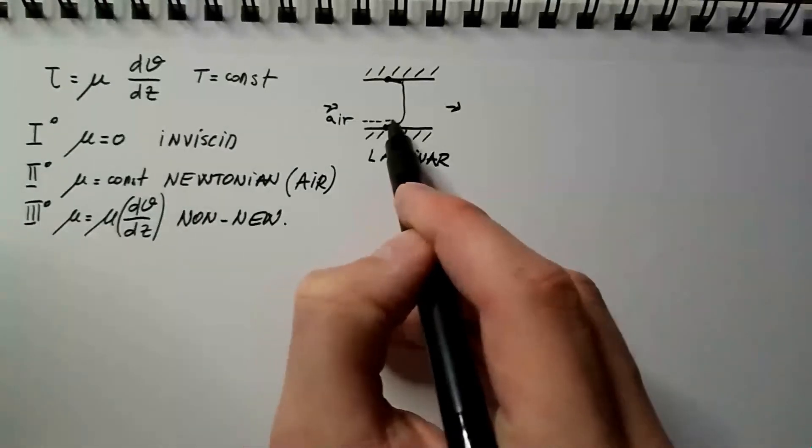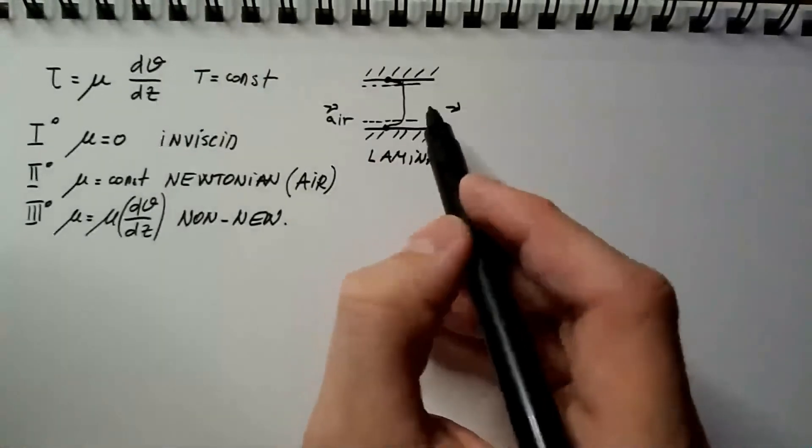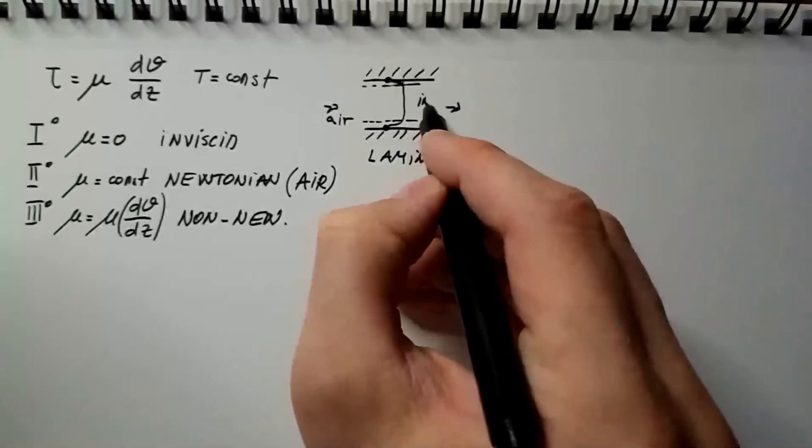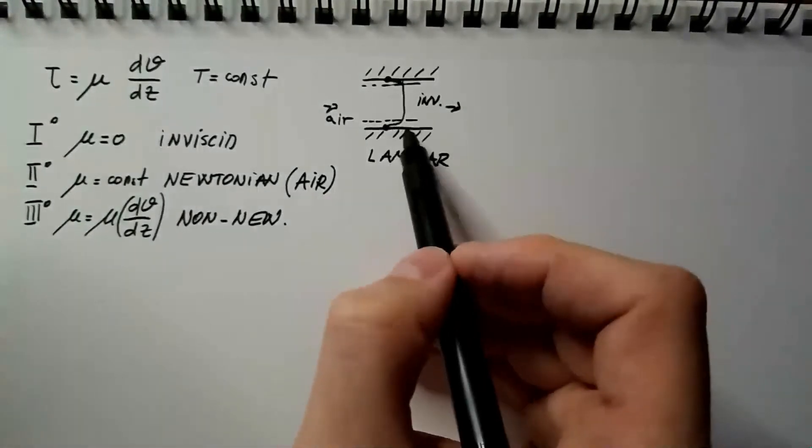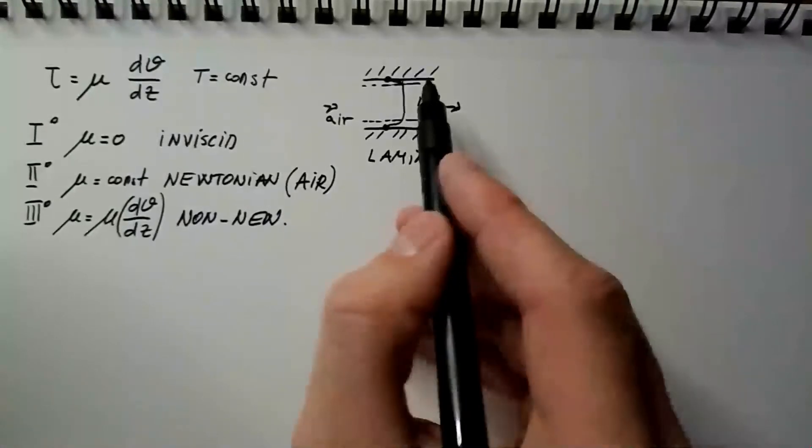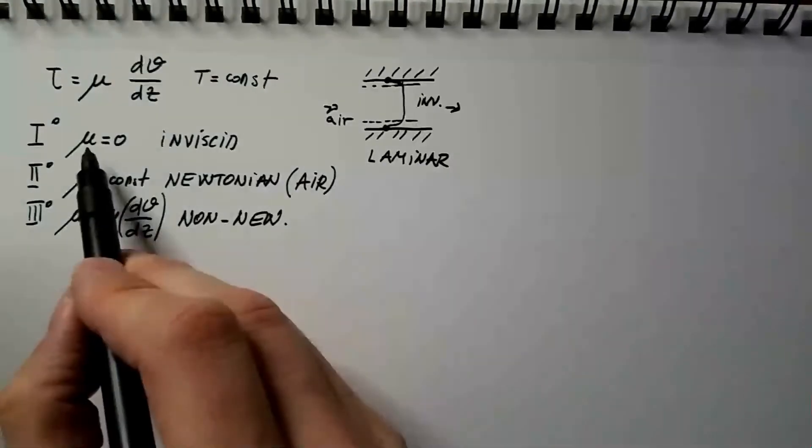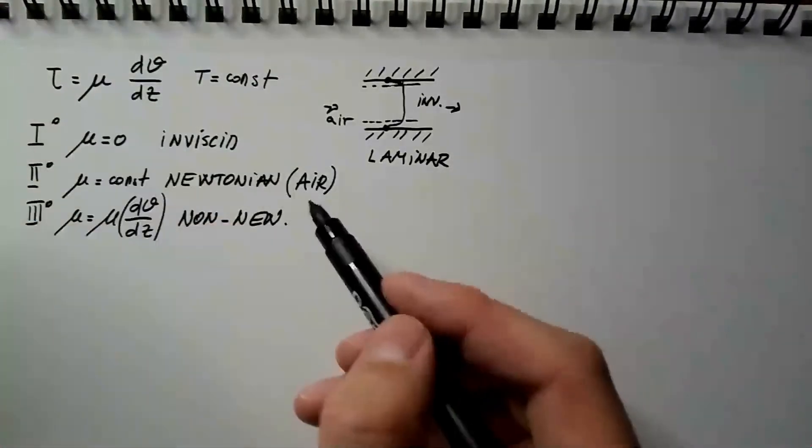Which means, if we are not interested in this part of the flow, then this part over here is to very good approximation inviscid. So, this middle part of the flow is very, very inviscid indeed. If we are interested in phenomena that take place very close to the wall, then we cannot assume that mu is zero, and we really need to treat this air using the Newton's law of viscosity.